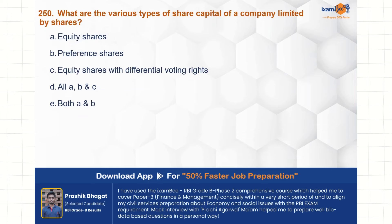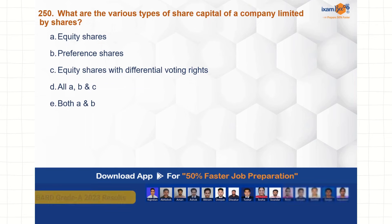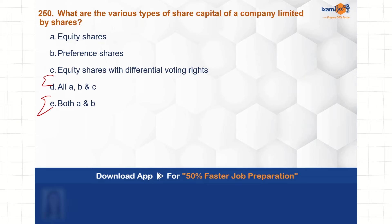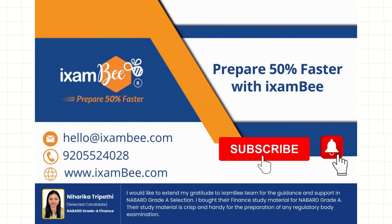Last question — the 250th question. What are the various types of share capital a company limited by shares can have? Options include: equity share capital, preferential capital, equity shares with differential voting rights, all of the above, or both A and B. Do let me know in the comment section what the answer should be. Thank you so much for watching this video. Join iExambi and prepare 50% faster.